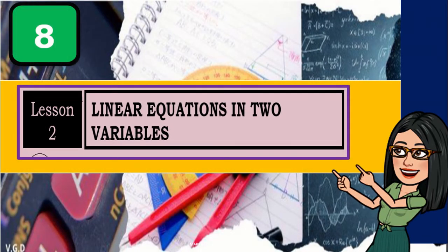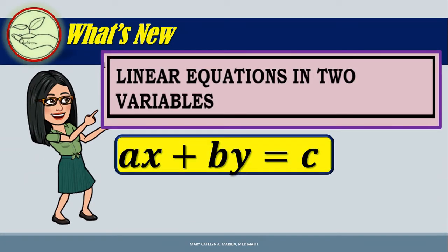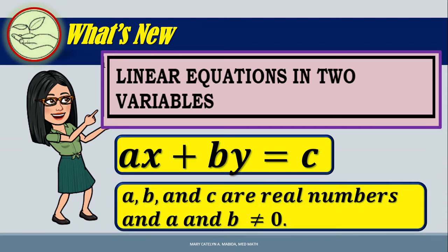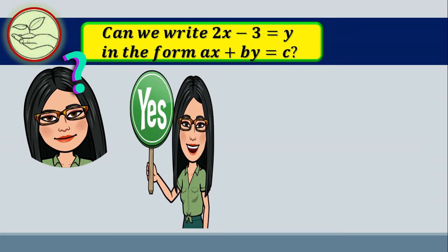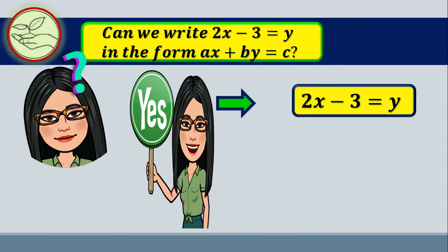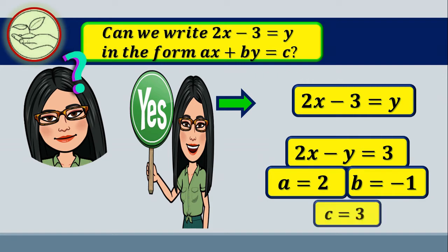A linear equation in two variables is an equation that can be written in the form ax plus by equals c, where a, b, and c are real numbers, and a and b are not equal to 0. For example, 2x minus 3 equals y can be written as 2x minus y equals 3, where a equals 2, b equals negative 1, and c equals 3.